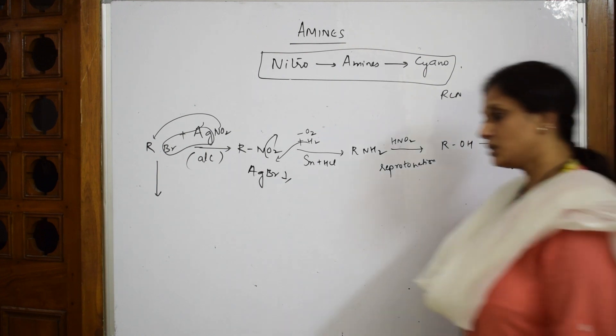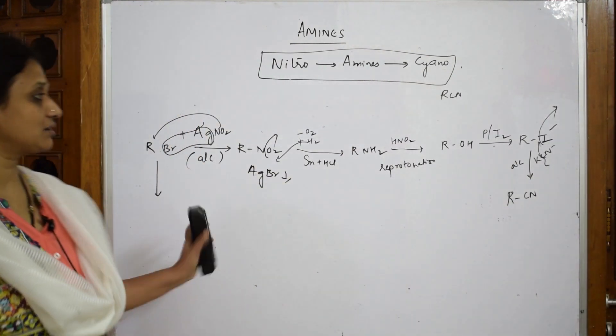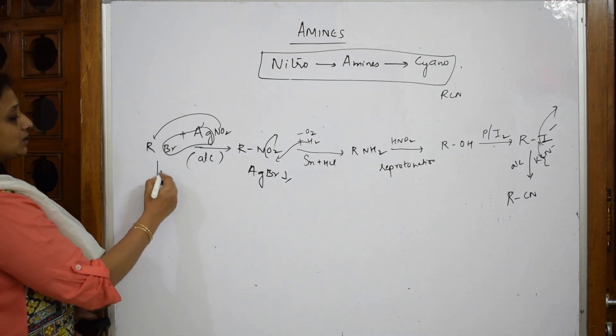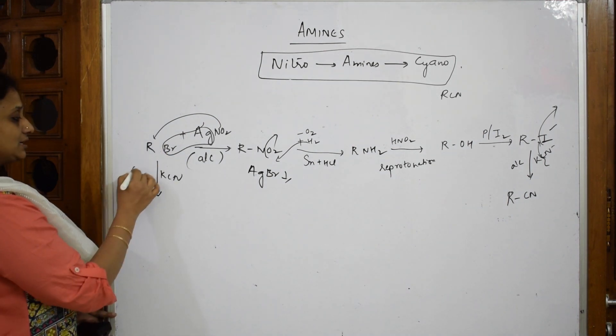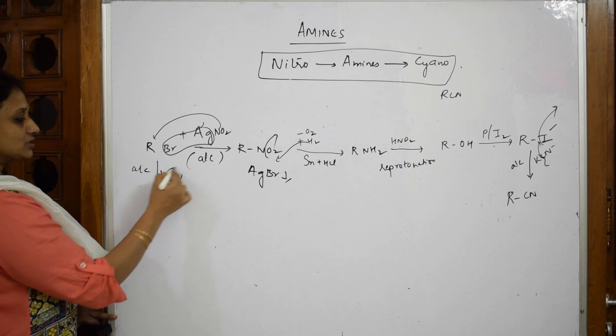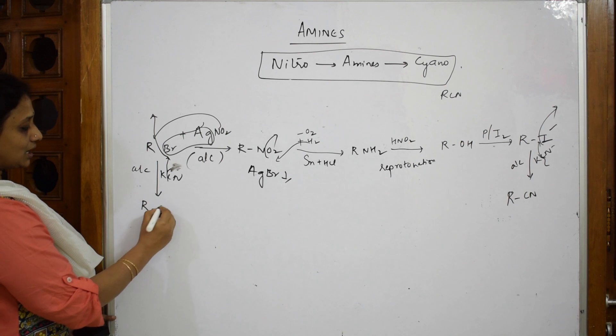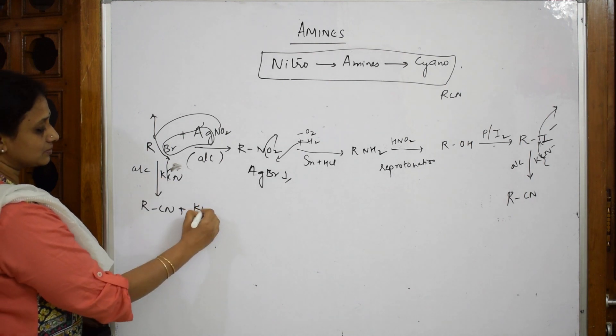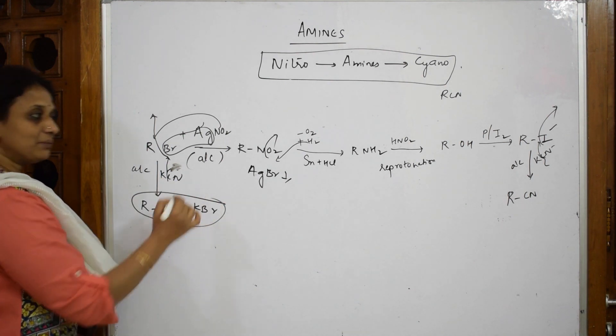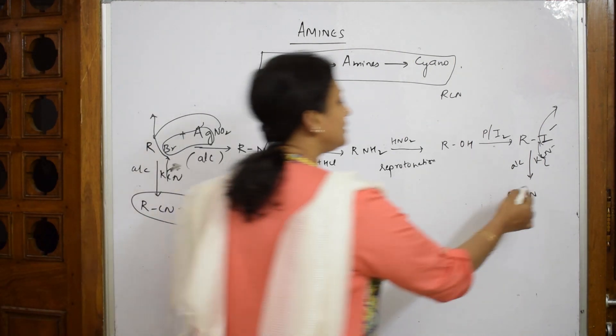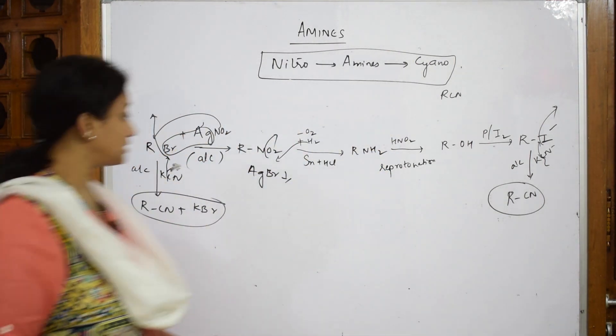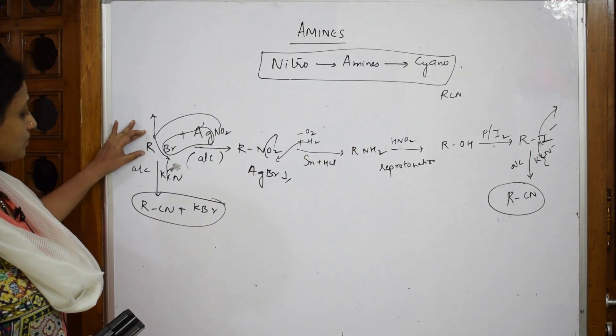One more option - easiest. If I can't remember so much, RBr if you treat with alcoholic KCN, your CN gets in, your Br is out. So you get RCN plus KBr. This is also one procedure.